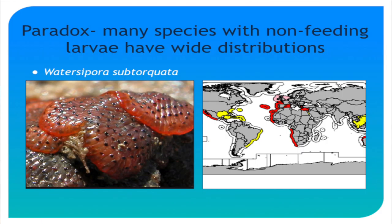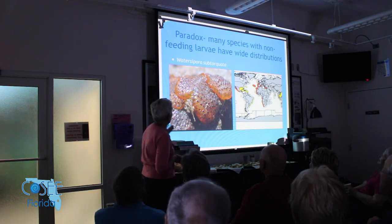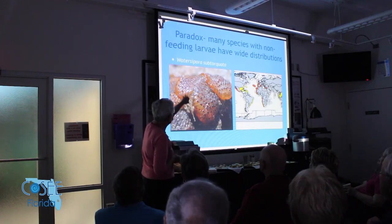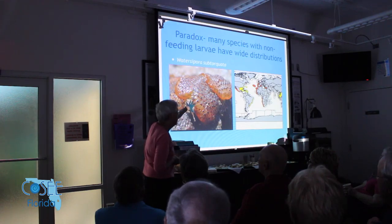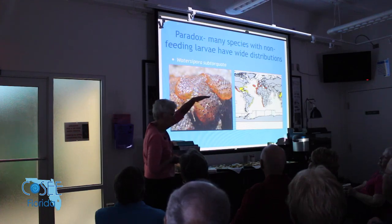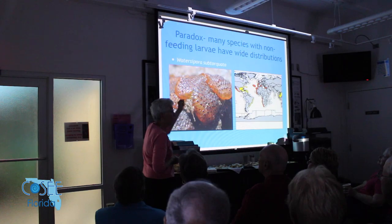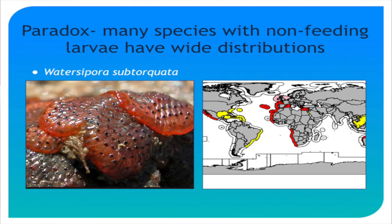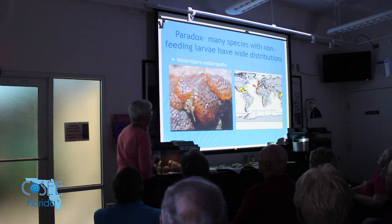Anyway, this is the paradox. Many species have non-feeding larvae — this is another species you find here, often encrusting rocks in the inlet or the worm reef. It's bright orange at the tips and blackish in the middle. That's the distribution of Watersipora, and you can see it's spread quite widely in warmer water, though it couldn't survive where winters are too cold.